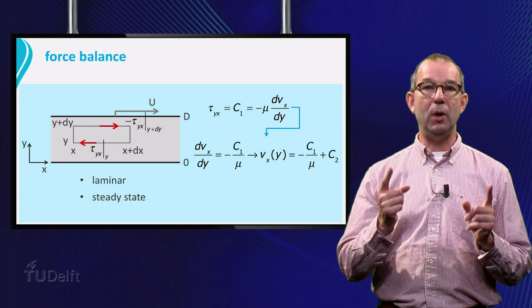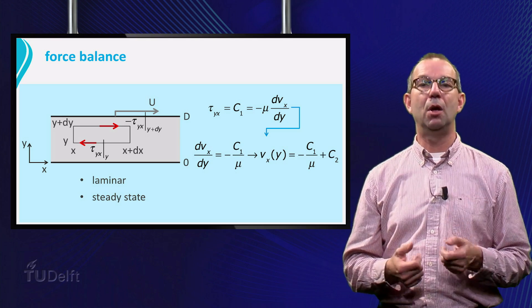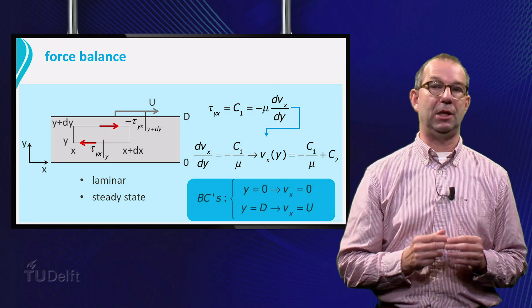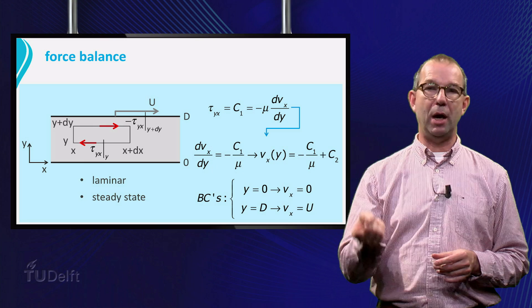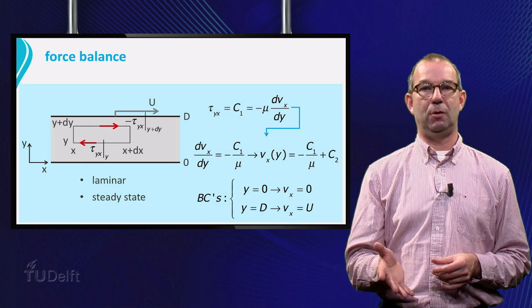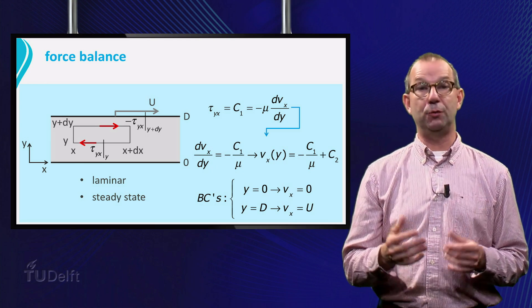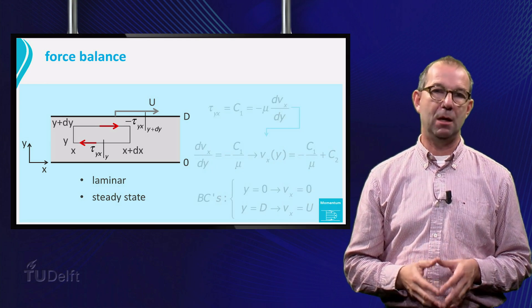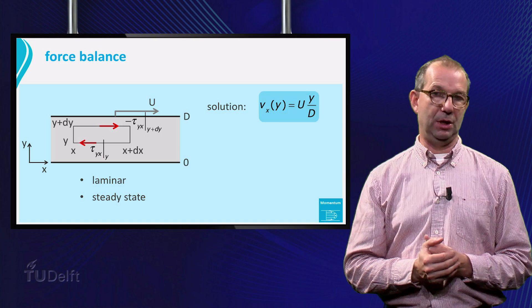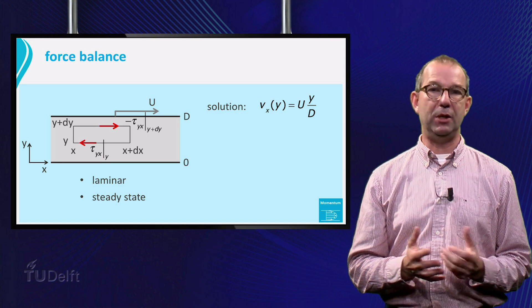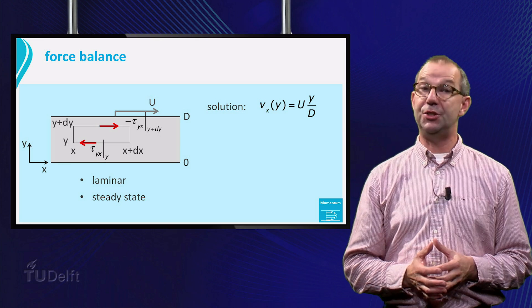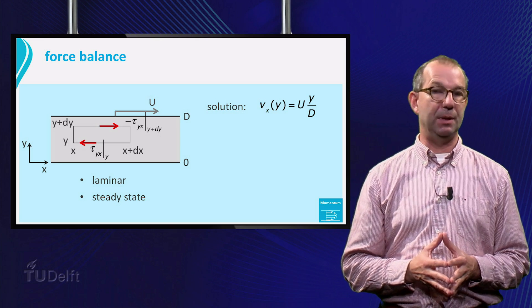The two integration constants c1 and c2 follow from the two boundary conditions. At y is 0, Vx is 0, and at y is d, Vx is u, the velocity of the top plate. Substitute the boundary conditions and you will get Vx is u times y over d, just as we anticipated in the beginning.